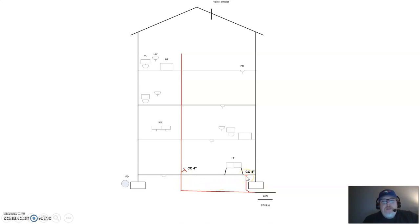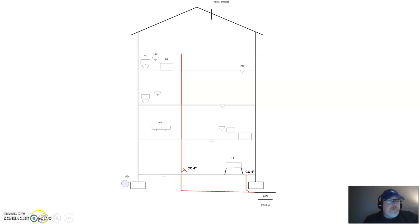I've also added another clean out just before the pipe leaves the building — a four inch clean out just right of the laundry tray. I'm using a 45-degree wye connection so it heads in the direction of the sanitary building sewer, since that's what it's meant to clean. It's sized at four inches because the sanitary building sewer must be a minimum of four inches, and the clean out maintains that four inch size.